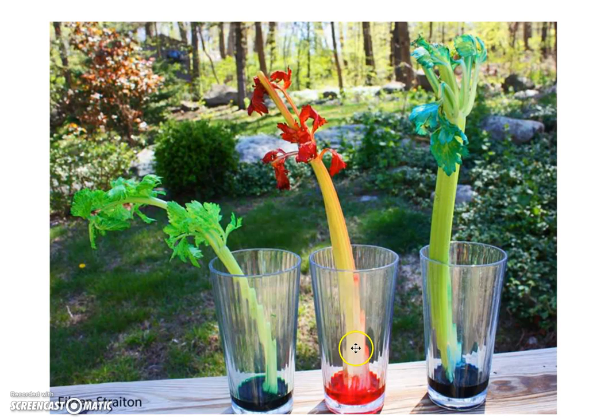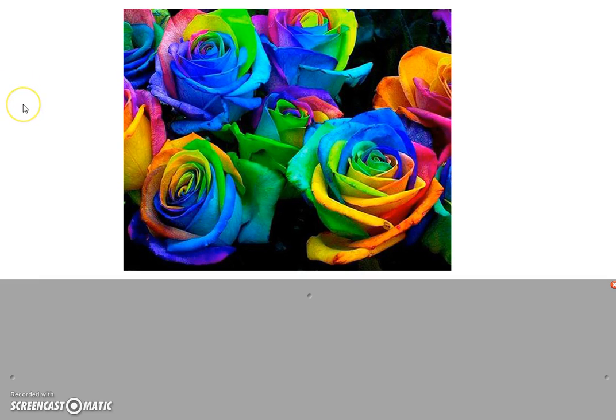So the food coloring gets pulled up through the tiny cells of the celery and gets pulled up all the way to the leaves.